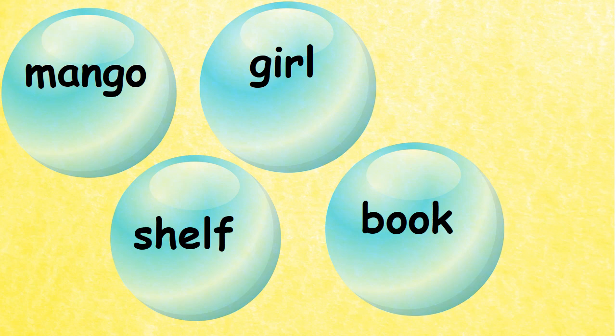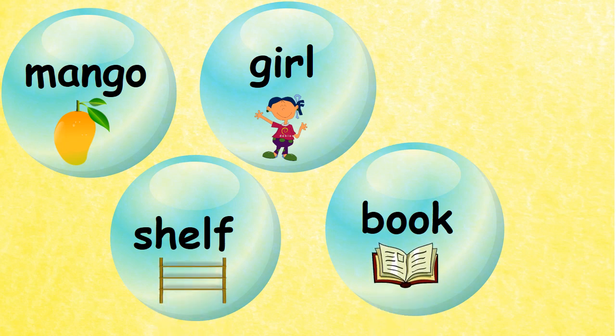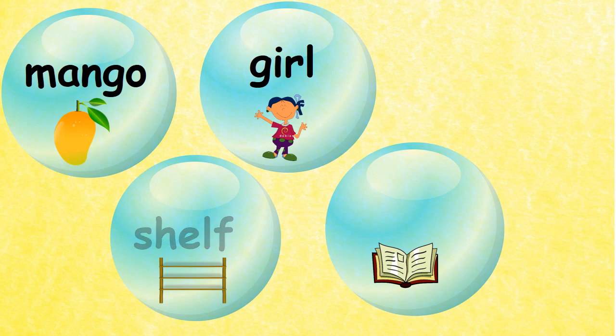Here we have mango, girl, shelf, and book. So our compound word is made from book and shelf — bookshelf.